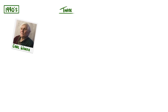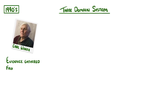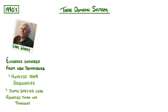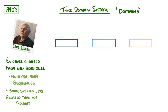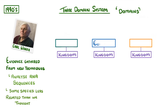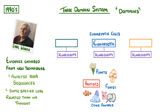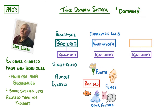For example, in the 1990s, a different Carl — this time Carl Woese — proposed the three-domain system. Using evidence gathered from new techniques that could analyze RNA sequences, he found that some species were less related than we thought. So he introduced three new categories called domains, placed above kingdoms. One of these is eukaryota, which contains all organisms that have eukaryotic cells similar to ours, such as plants, fungi, protists, and other animals. Meanwhile, bacteria refers to the very tiny single-celled prokaryotic organisms found almost everywhere. And finally, archaea, which were originally thought to be bacteria, are actually a different type of prokaryotic cell, often found in extreme conditions like hot springs and salt lakes.